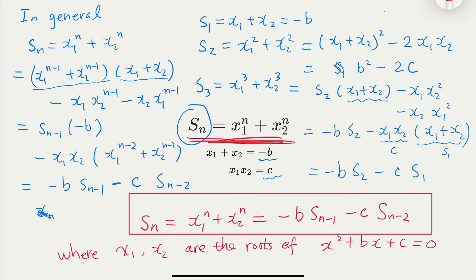So next time someone asks you to calculate, say, S100, what you can do is build up from S1 and S2. Once you have two numbers S1 and S2, you can find S3; once you have S2 and S3, you can find S4, and so on until you reach S100.